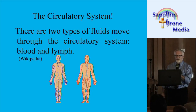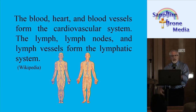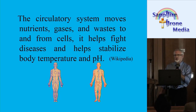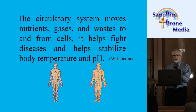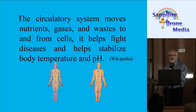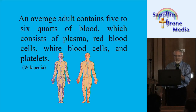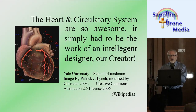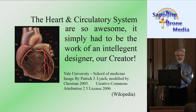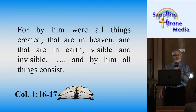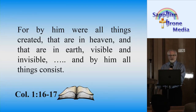The circulatory system is awesome. There are two types of fluid that move through it: blood and lymph. The blood, heart, and blood vessels form the cardiovascular system; the lymph nodes and vessels form the lymphatic system. The circulatory system moves nutrients, gases, and wastes from cells, helps fight disease, and helps stabilize blood temperature and pH levels. An average adult contains 5 to 6 quarts of blood consisting of plasma, red blood cells, white blood cells, and platelets. The heart and circulatory system are so awesome they simply had to be the work of an intelligent designer — our creator God.